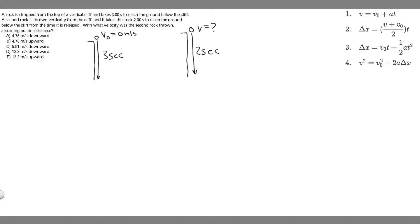In this problem, we're told a rock is dropped from a vertical cliff and takes three seconds to reach the ground below the cliff. A second rock is thrown vertically from the cliff, and it takes two seconds to reach the ground below the cliff from the time it is released.